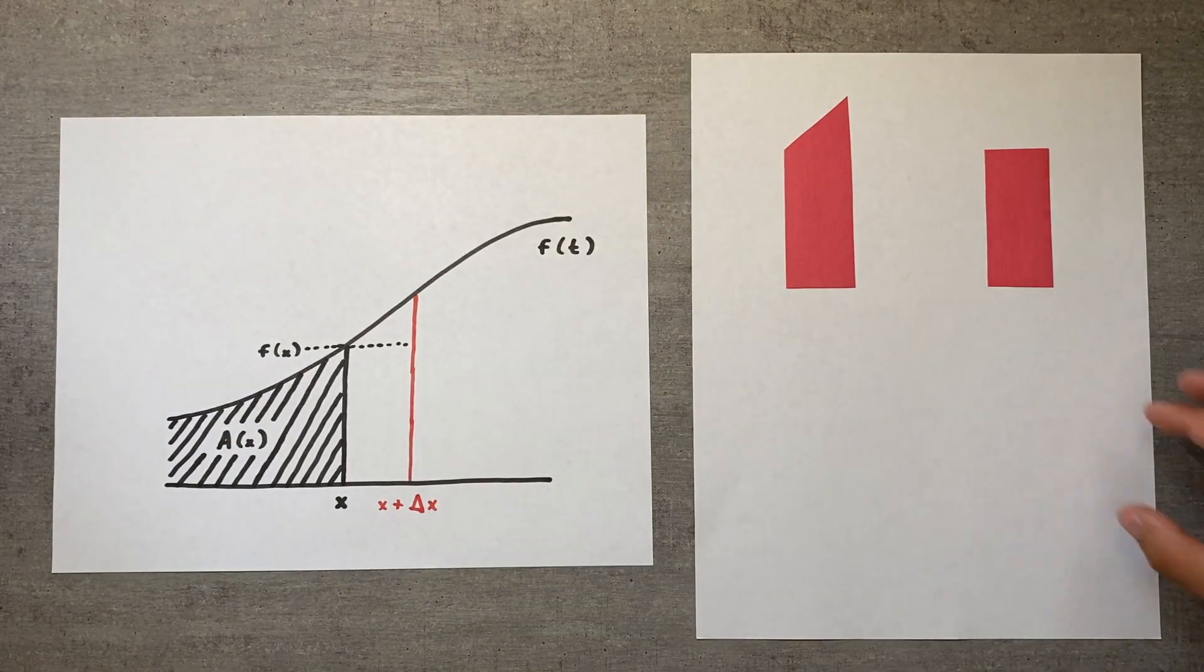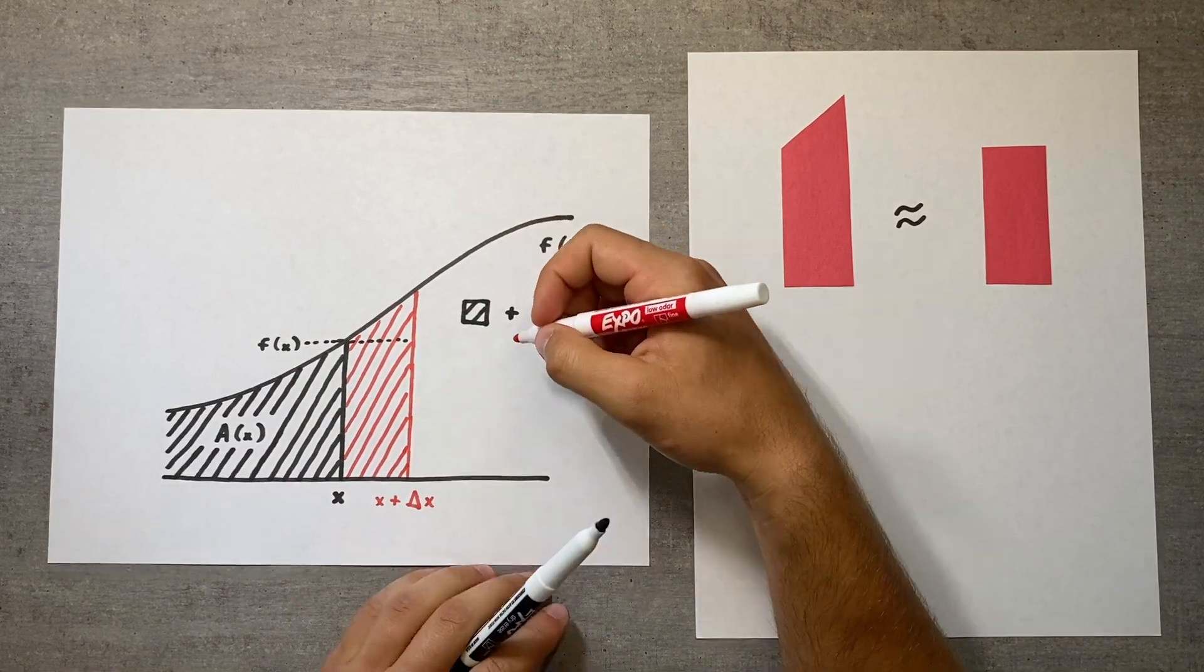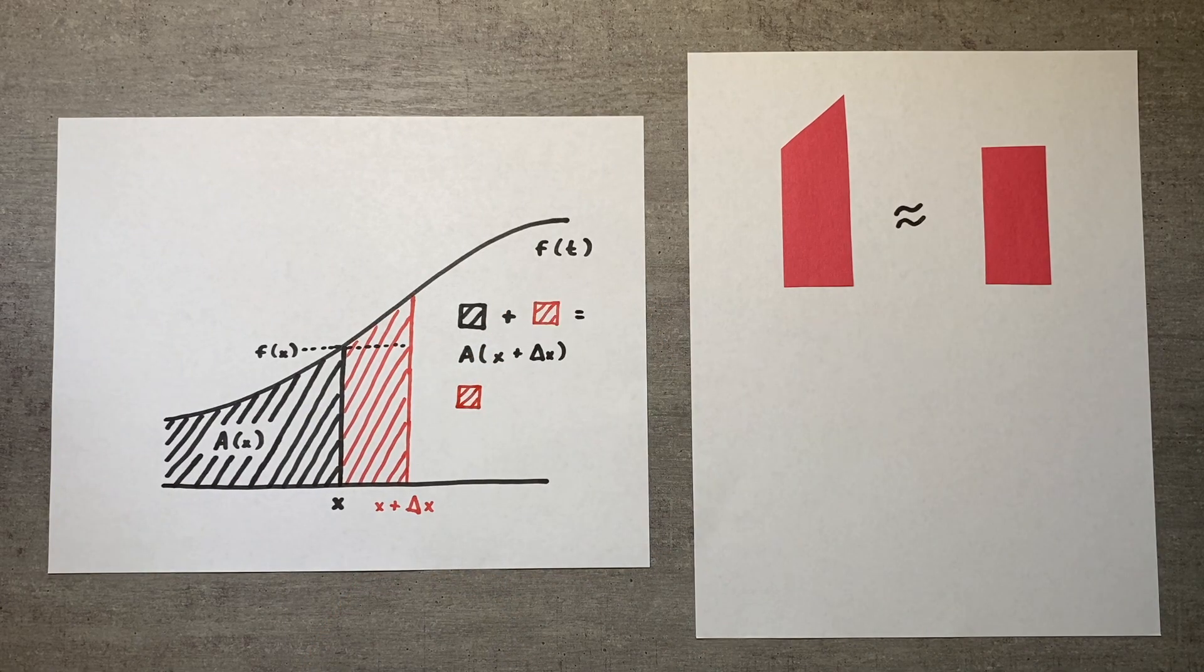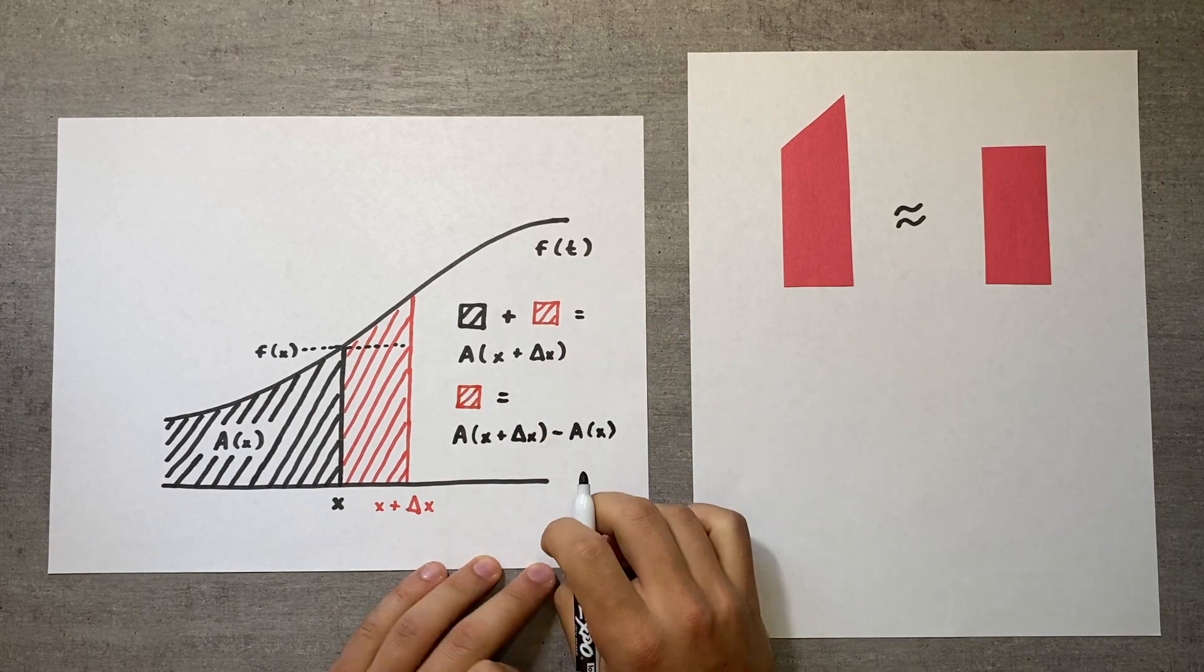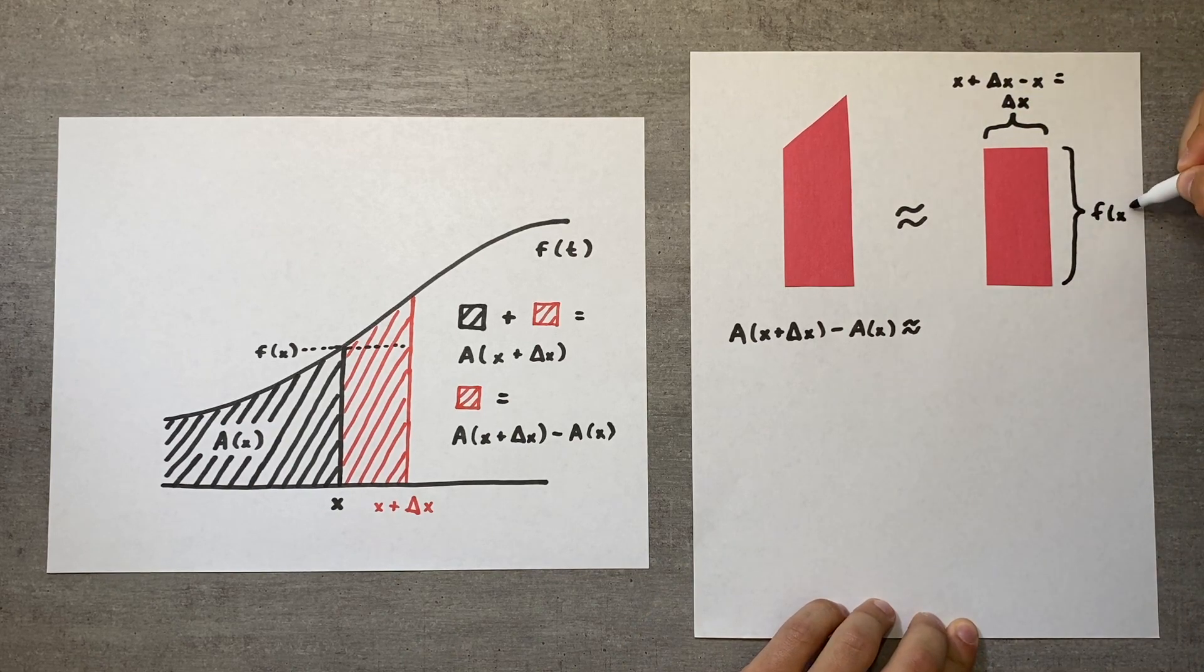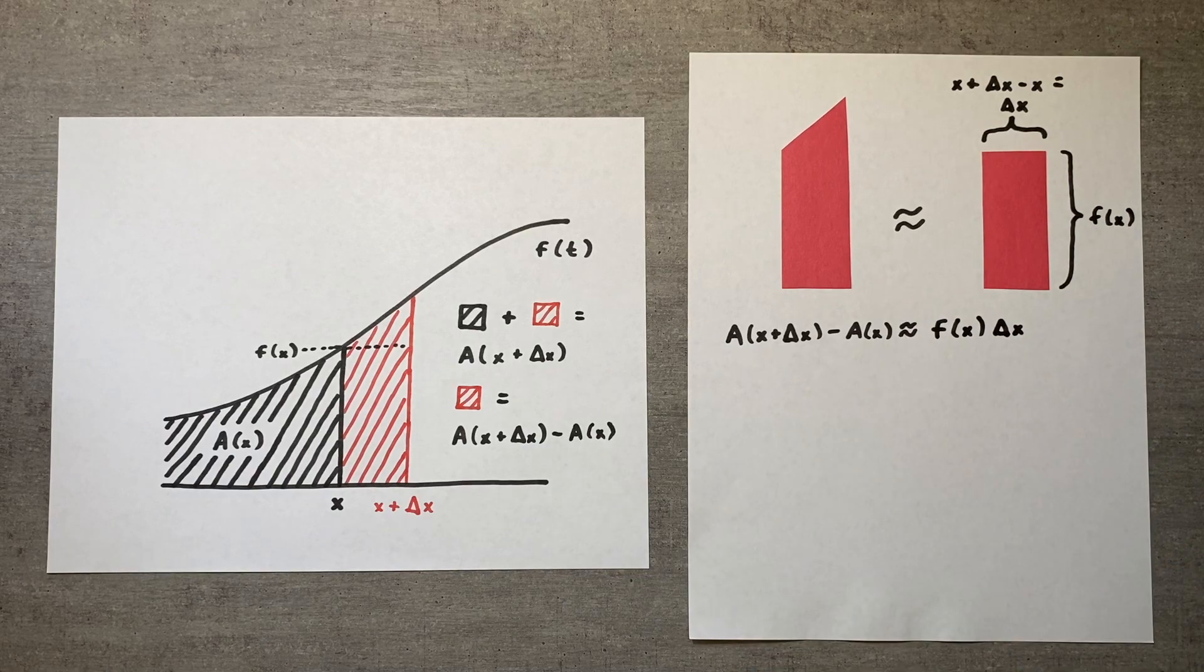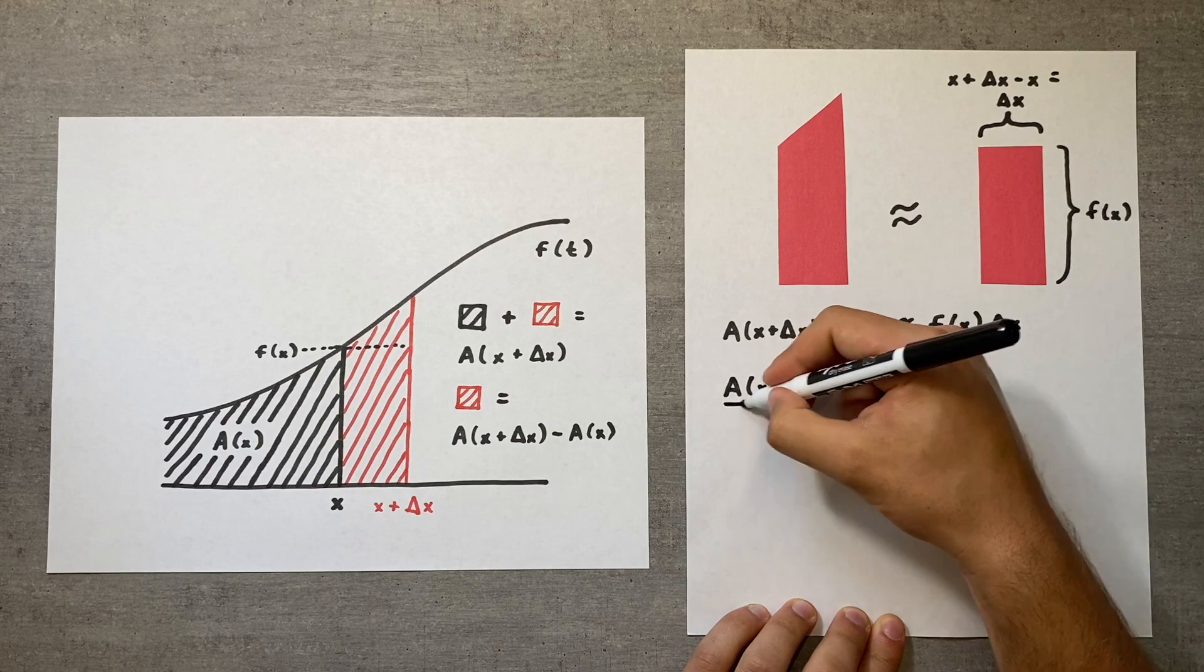Let's write down this estimate algebraically. Since the total area to the left of x plus delta x is equal to a of x plus delta x, and the area to the left of x is equal to a of x, the change in area is equal to the difference of these two values. Now we turn to the rectangle. Notice that it has a width of delta x and a height of f of x, so its area is equal to f of x times delta x. Once we divide both sides by delta x, the equation starts to look very familiar.